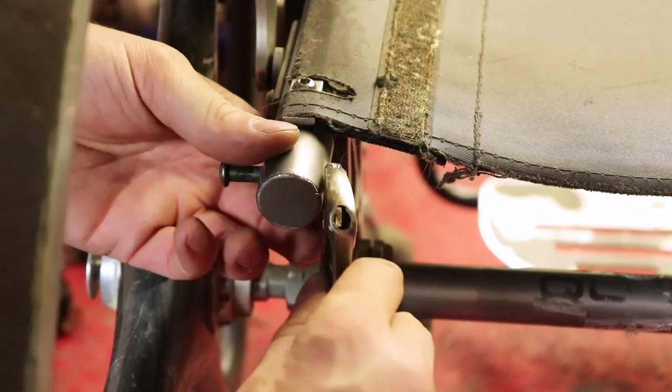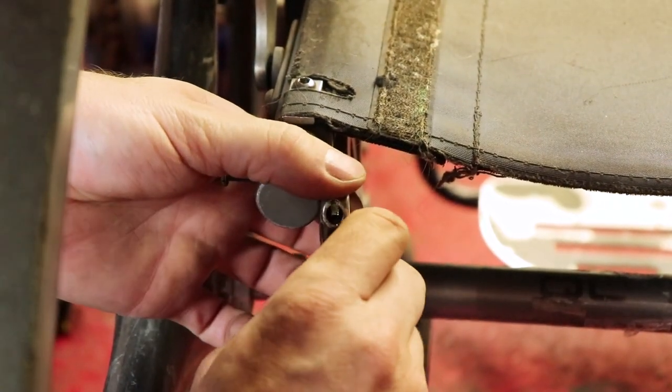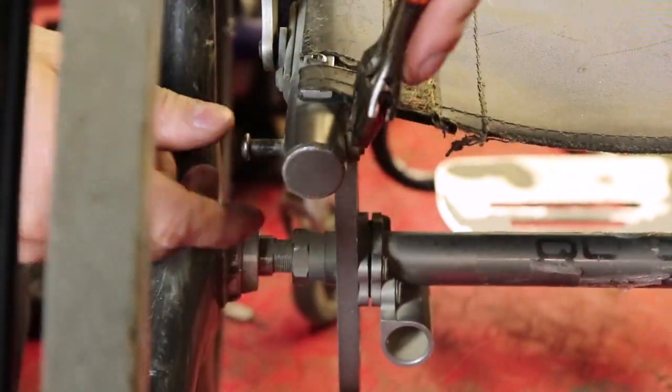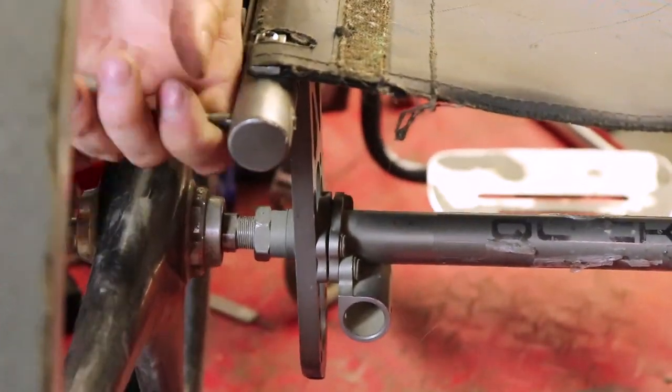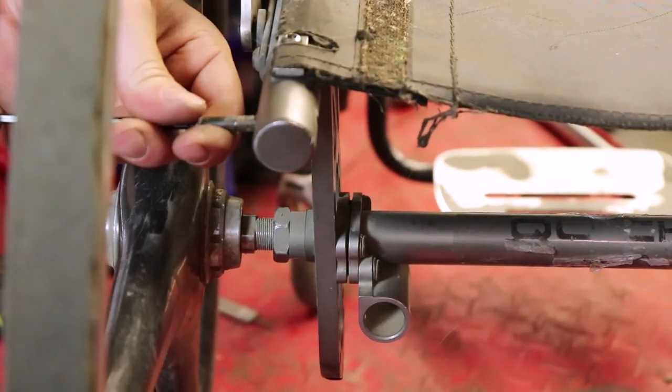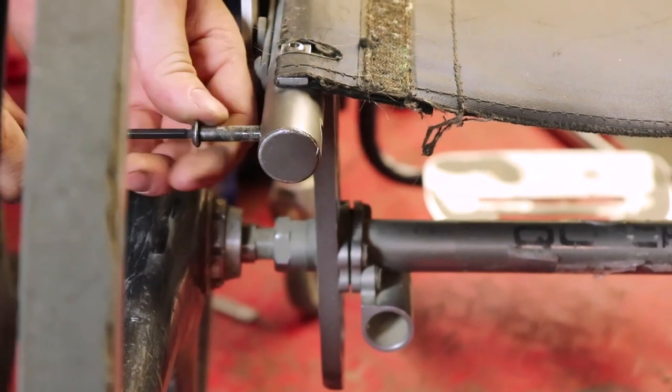Once we determined that the tubing on the wheelchair is pretty uniform and it happens to be just about the right size for what we need, we're going to take the plug off the back of this part of the wheelchair and just cut a small piece off so we're not destroying the wheelchair.